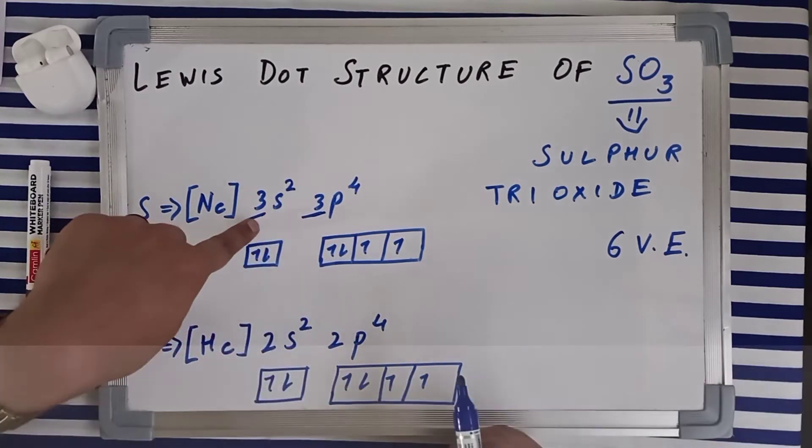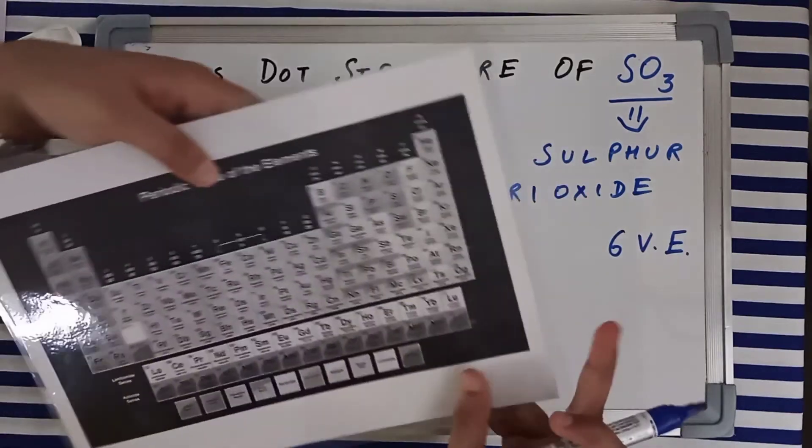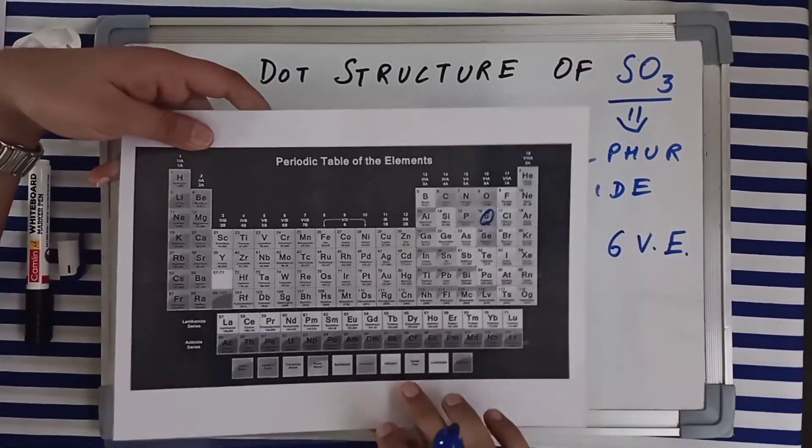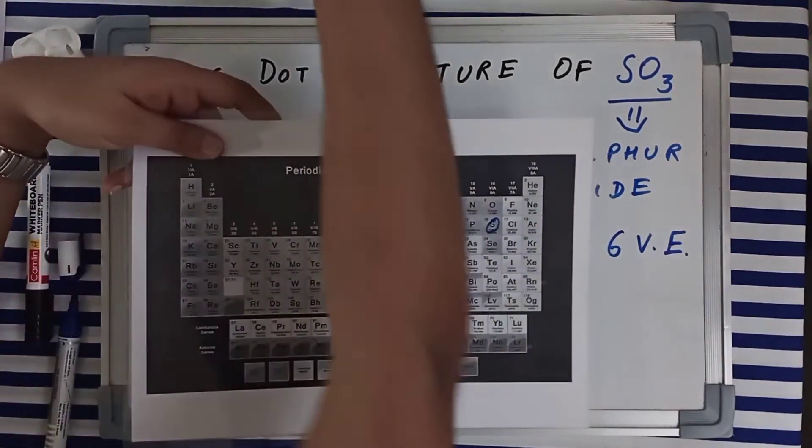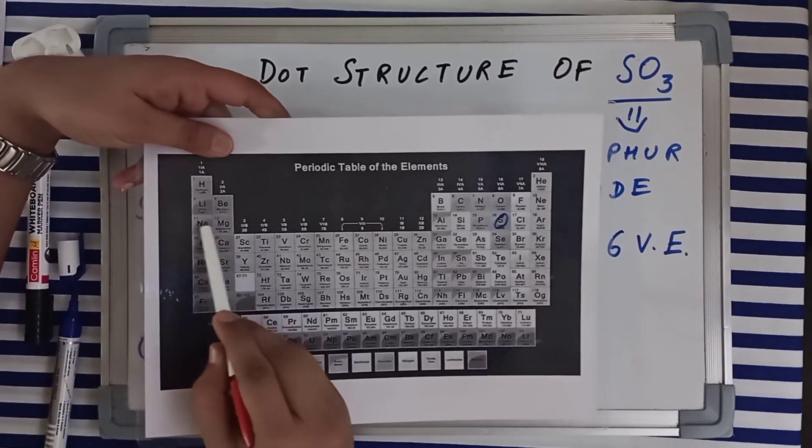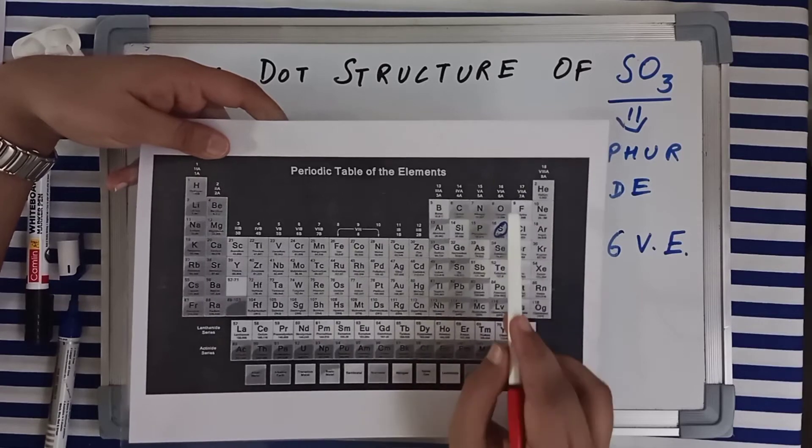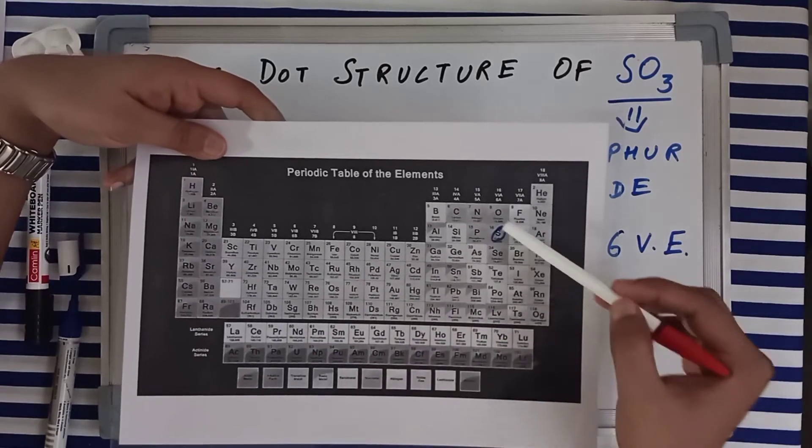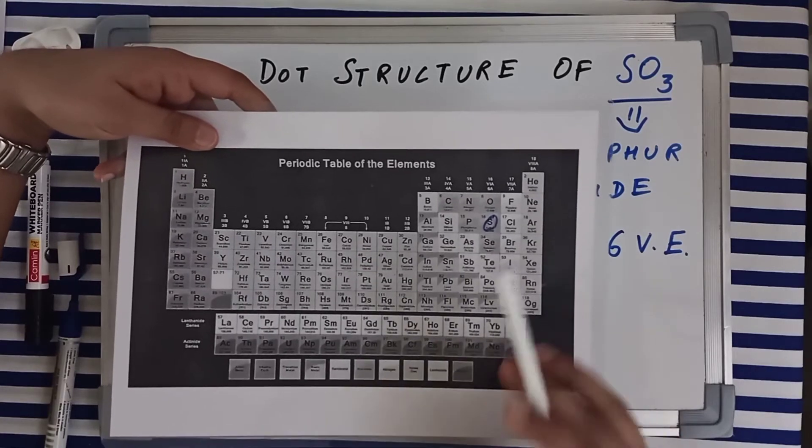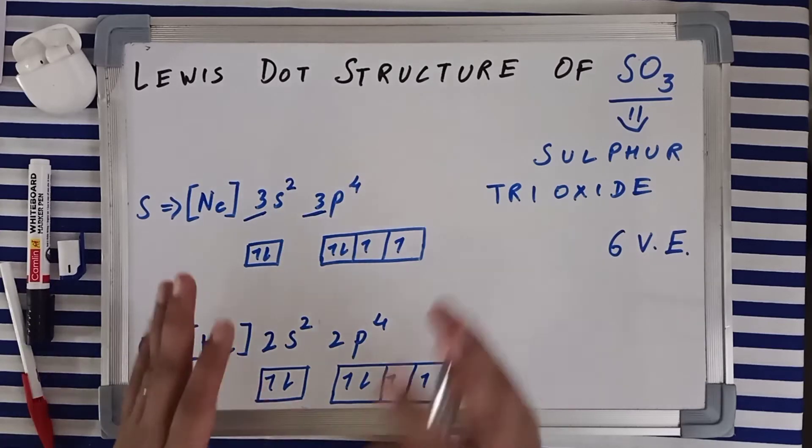See, it is a third period element. Let me show you the periodic table. Here sulfur is present here, which is in the third period. Your third period is this one from sodium till argon, and sulfur comes in between just below the oxygen. Sulfur is also in the oxygen family. So sulfur has a vacant 3d subshell also which is presently having nil electrons.